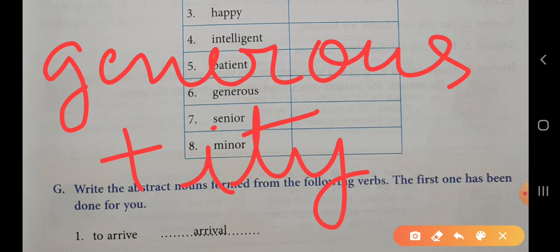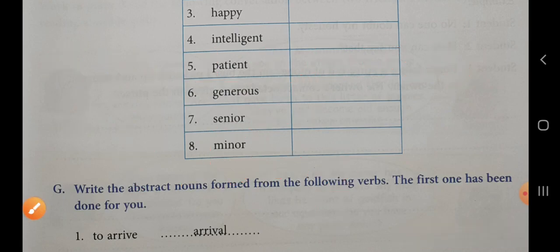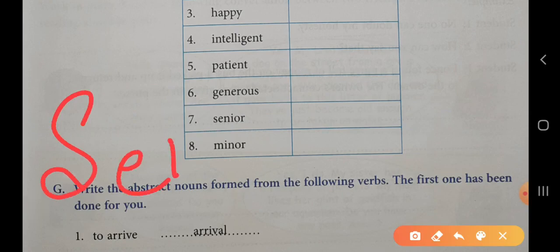senior. So the abstract noun will be seniority. The spelling: S-E-N-I-O-R is the original spelling. What should we add? Plus I-T-Y. So seniority is the abstract noun for senior.